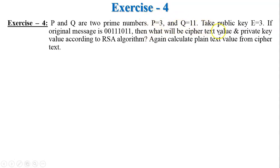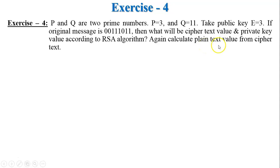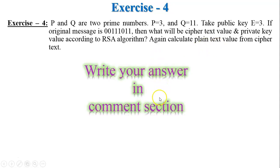Write your answer in the comment section. Exercise number four: p equals 3, q equals 11, and public key e equals 3. The original message is given in binary — convert it to decimal, then calculate the ciphertext value and private key d, and calculate the plaintext value back from the ciphertext.